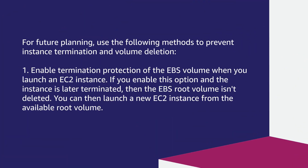For future planning, use the following methods to prevent instance termination and volume deletion. Enable termination protection of the EBS volume when you launch an EC2 instance. If you enable this option and the instance is later terminated, then the EBS root volume isn't deleted. You can then launch a new EC2 instance from the available root volume.